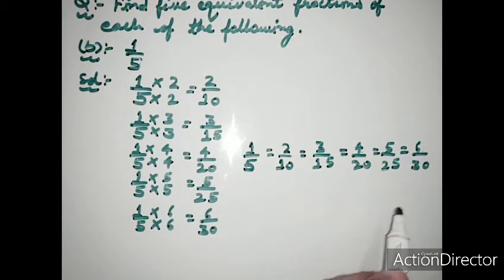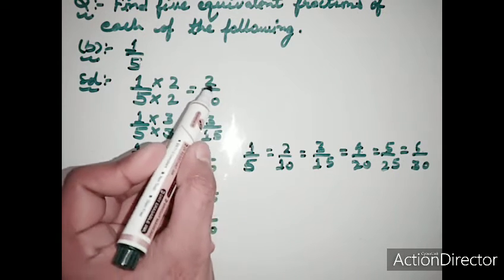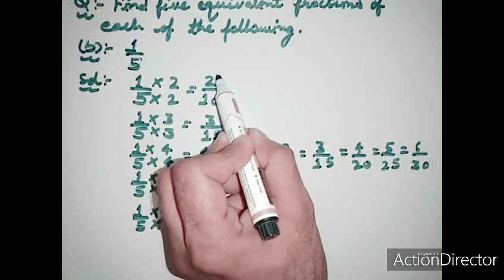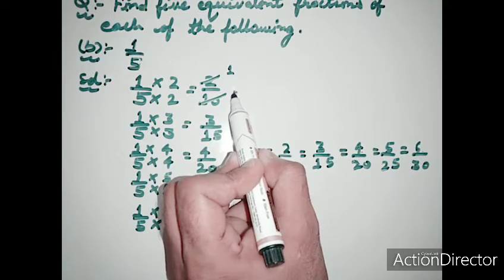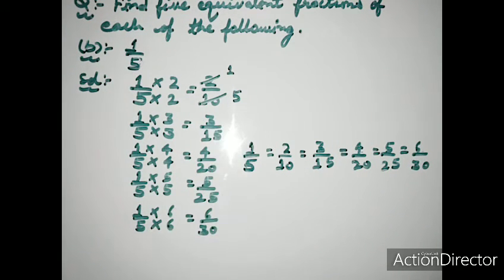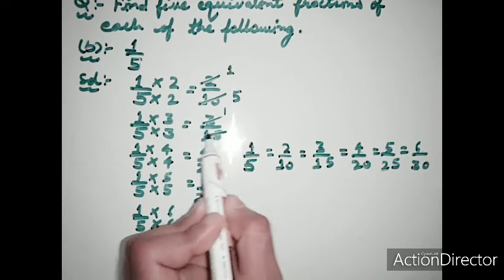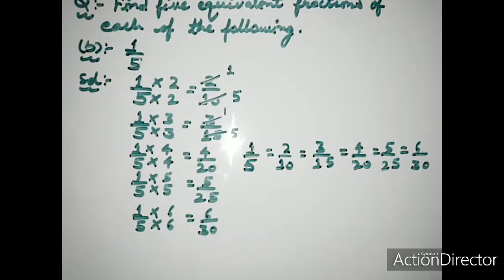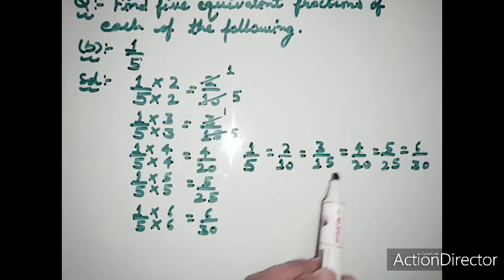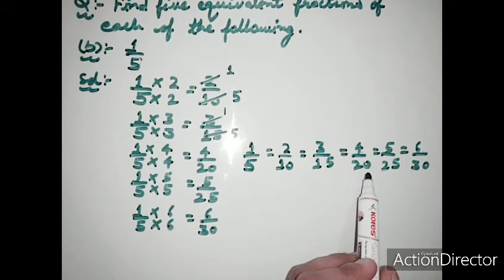We call these all equivalent fractions because if we reduce them to simplest form, we always get 1 upon 5. For example, 2 upon 10 reduces to 1 upon 5, and 3 upon 15 also reduces to 1 upon 5. Since all these fractions have the same value, they are called equivalent fractions.